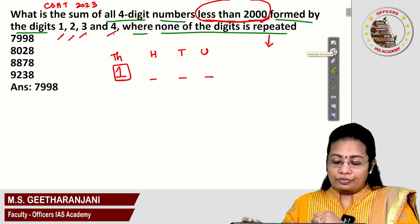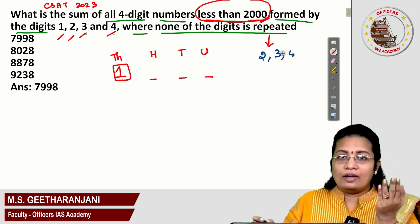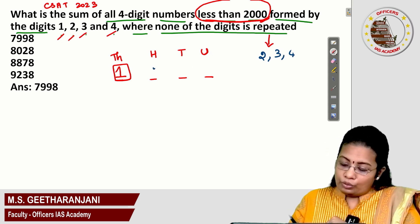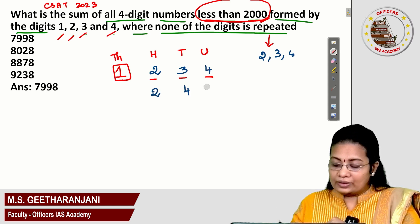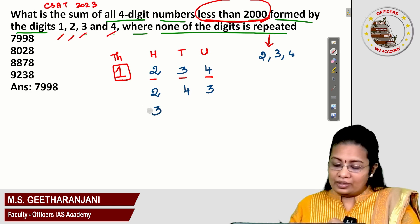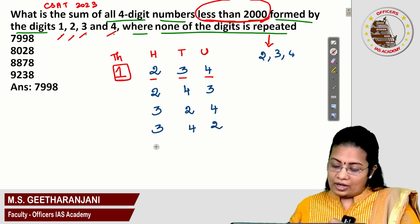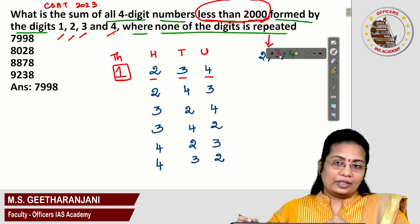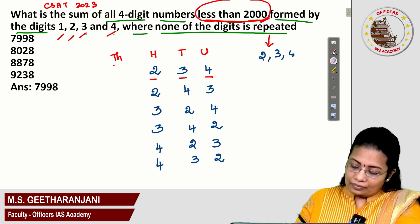Let's arrange the remaining digits 2, 3 and 4 in the six different ways across units, tens, and hundreds places. The arrangements are: 2,3,4 — then 2,4,3 — then 3,2,4 — then 3,4,2 — then 4,2,3 — and finally 4,3,2 in the remaining places. In all these possibilities, only 1 is placed in the thousands digit. Keeping this in mind, 1 is fixed in the thousands place.